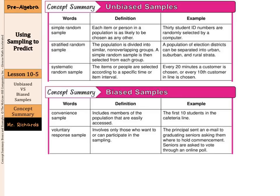The other type of biased sample is the voluntary response sample. These involve only those who want to or can participate in the sampling. An example: the principal sent an email to graduating seniors asking them where to hold commencement, and seniors are asked to vote through an online poll. That sounds like you're opening it up to everybody, but in reality it's only going to those who are going to respond, and it's not truly random who ends up responding.